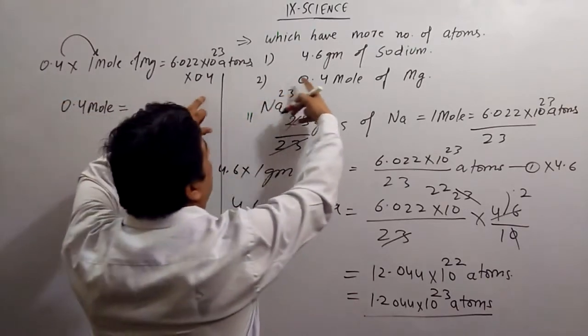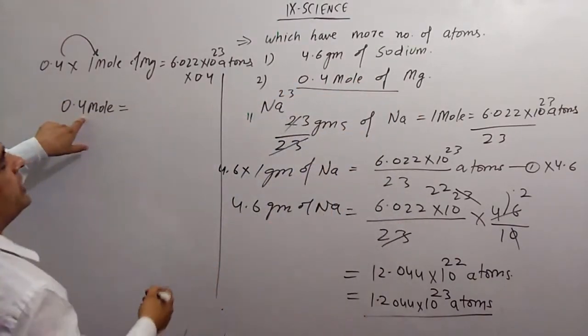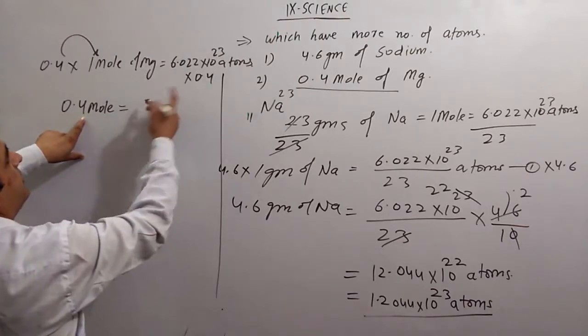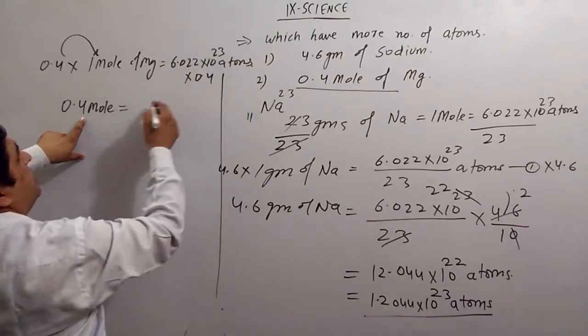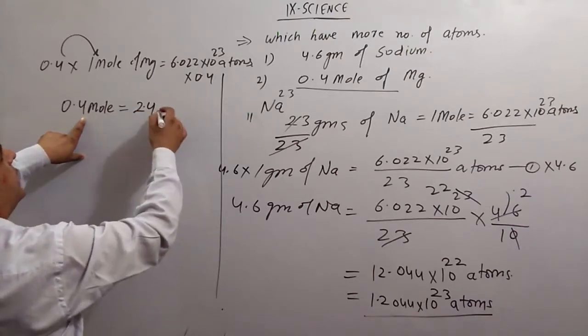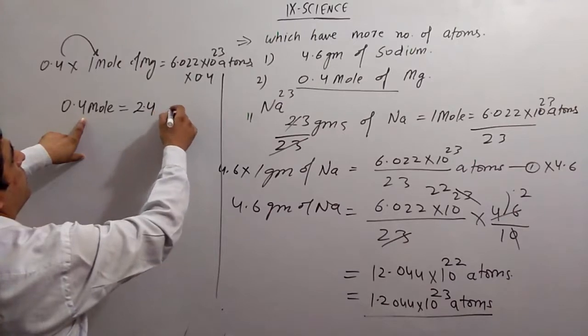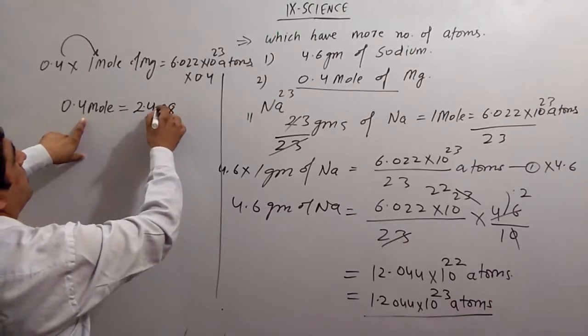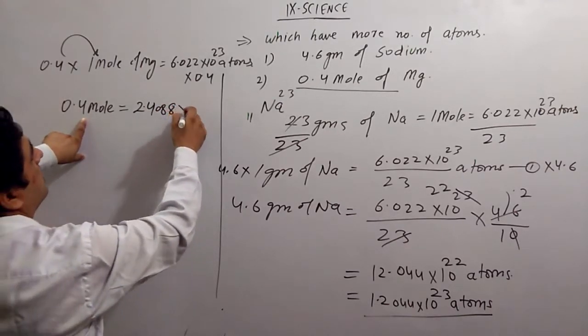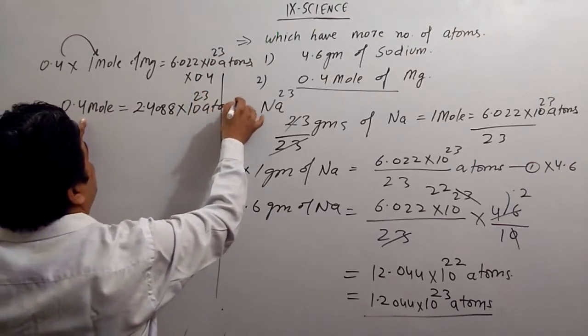That is the number of atoms in 0.4 mole. Multiply it with 6.022. 0.4 times 6 gives 2.4. Multiply with 10^23 atoms.